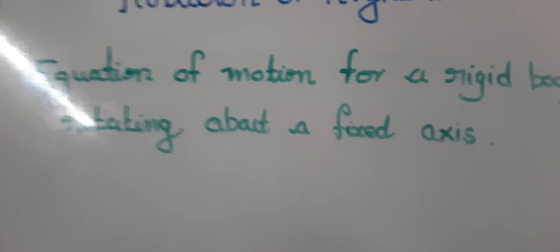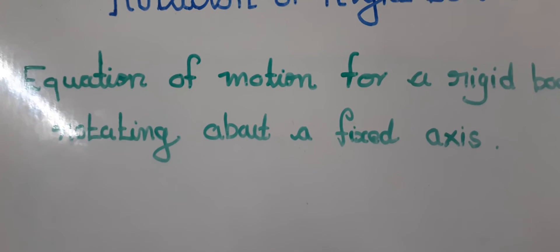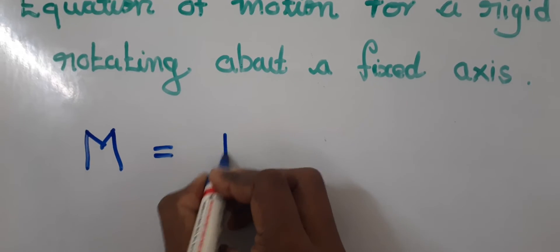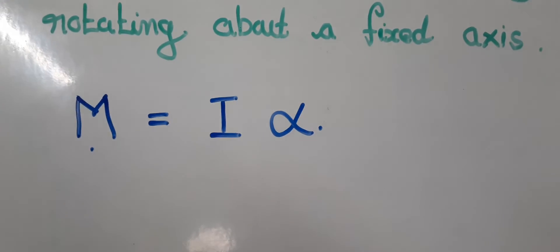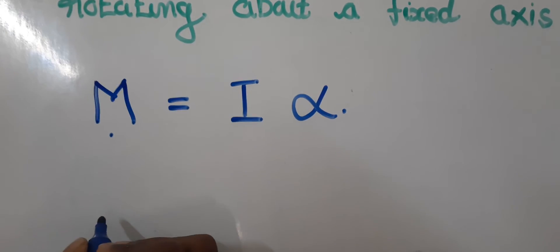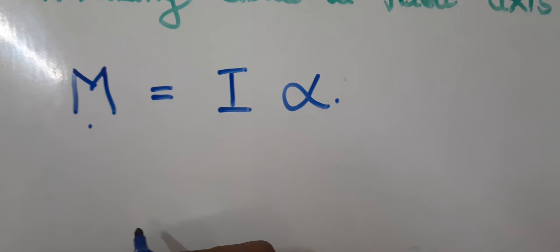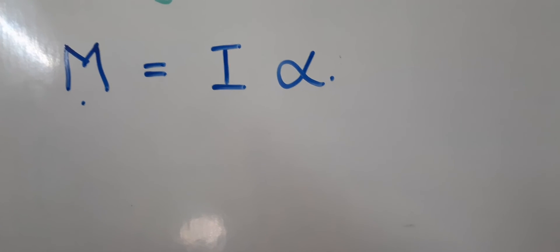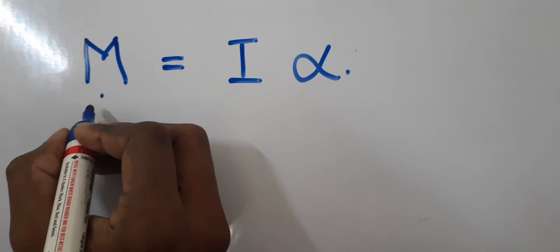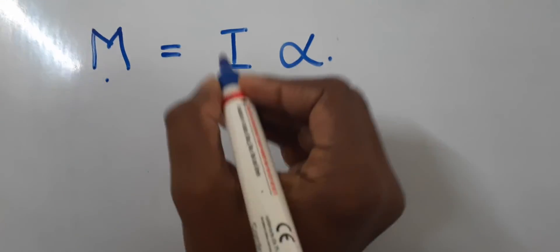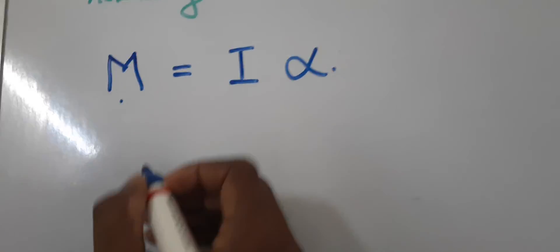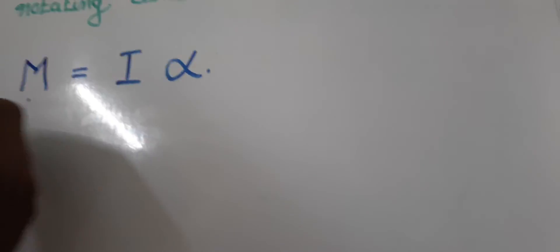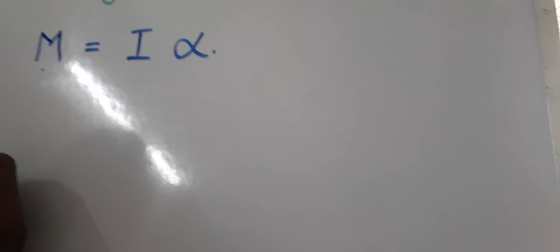Now let us look at the equation of motion for a rigid body rotating about a fixed axis. The equation is M equals I times alpha, where M is the net moment of all external forces acting on the rigid body, I is the mass moment of inertia of the body, and alpha is the angular acceleration. Here M is the rotational counterpart of force, I is the rotational counterpart of mass, and alpha is the rotational counterpart of linear acceleration.